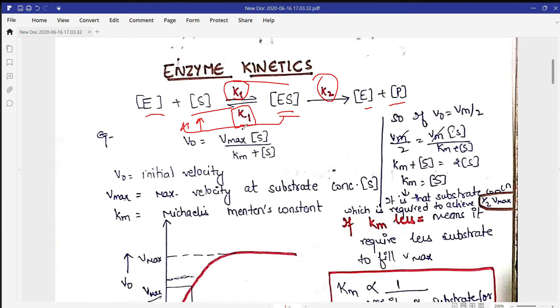Here is the equation. This is the Michaelis-Menten equation with V0, which means initial velocity. Vmax is maximum velocity at a particular substrate, which we call Vmax. This is substrate concentration [S], and Km is Michaelis-Menten's constant. S is again substrate concentration. So remember this equation, this is very important.